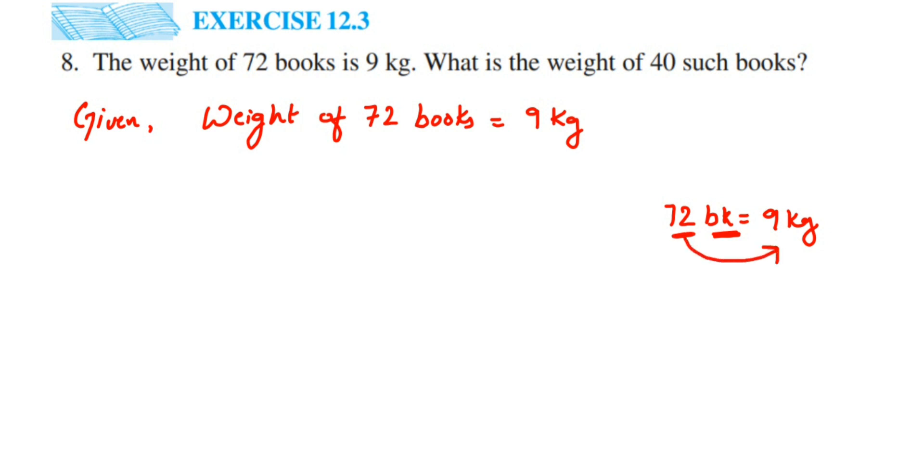Then we are going to get the weight of the book. So book will be equal to, I am just writing BK here, BK is book. So this is equal to 9 divided by 72 kg because I want to find out the weight of the 1 book. So divide this further and whatever answer we got, that will be the weight of 1 book.